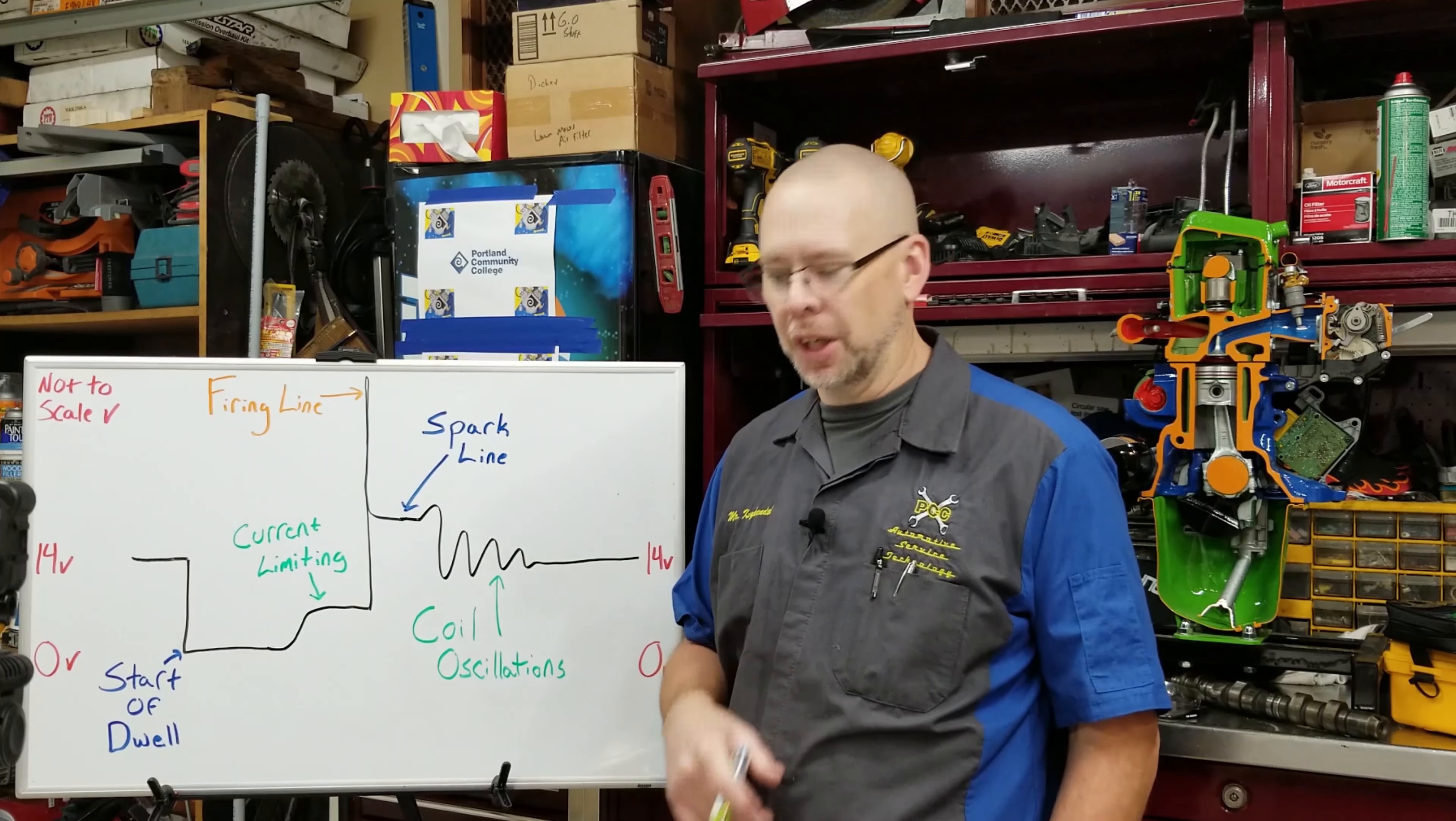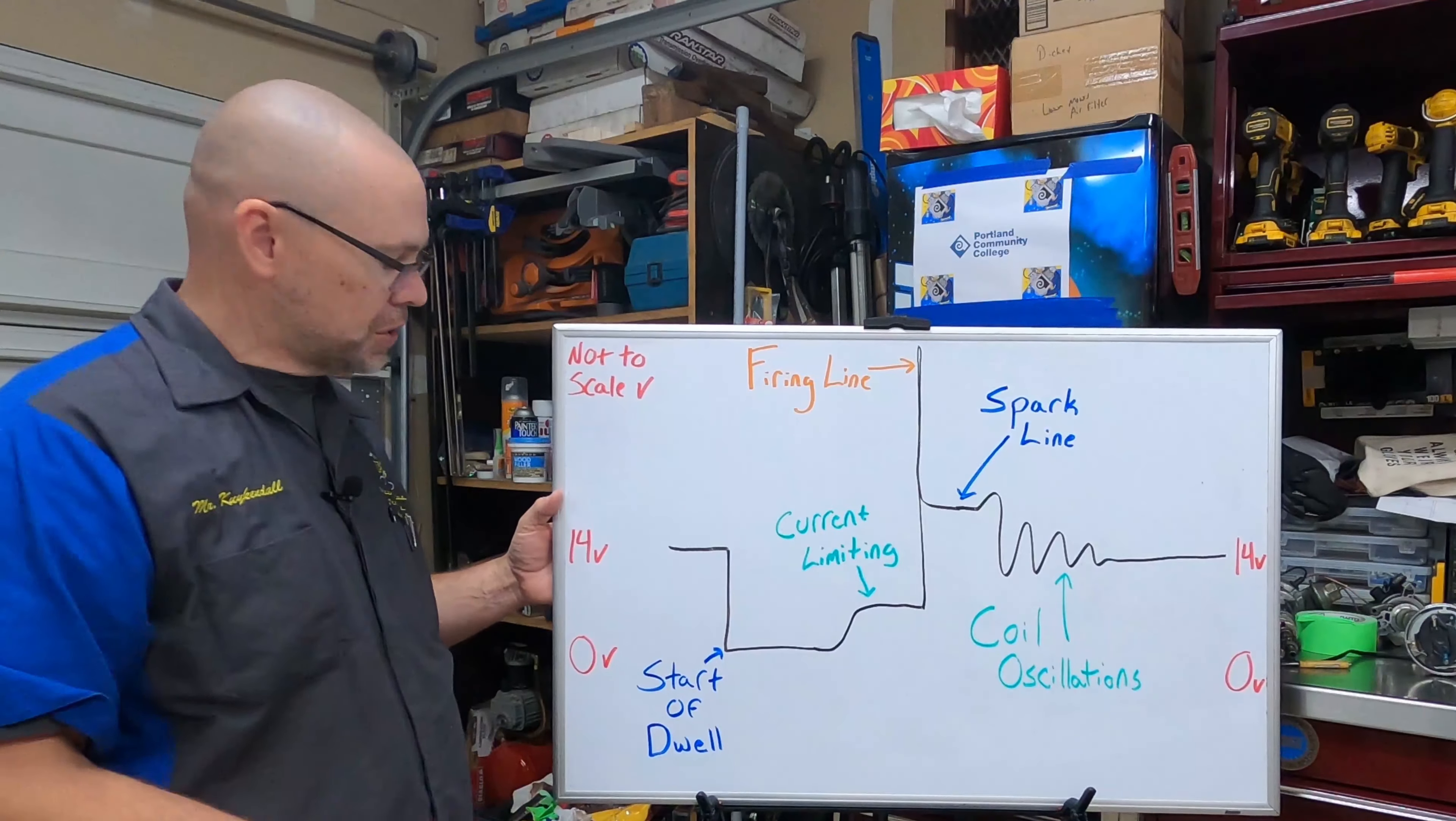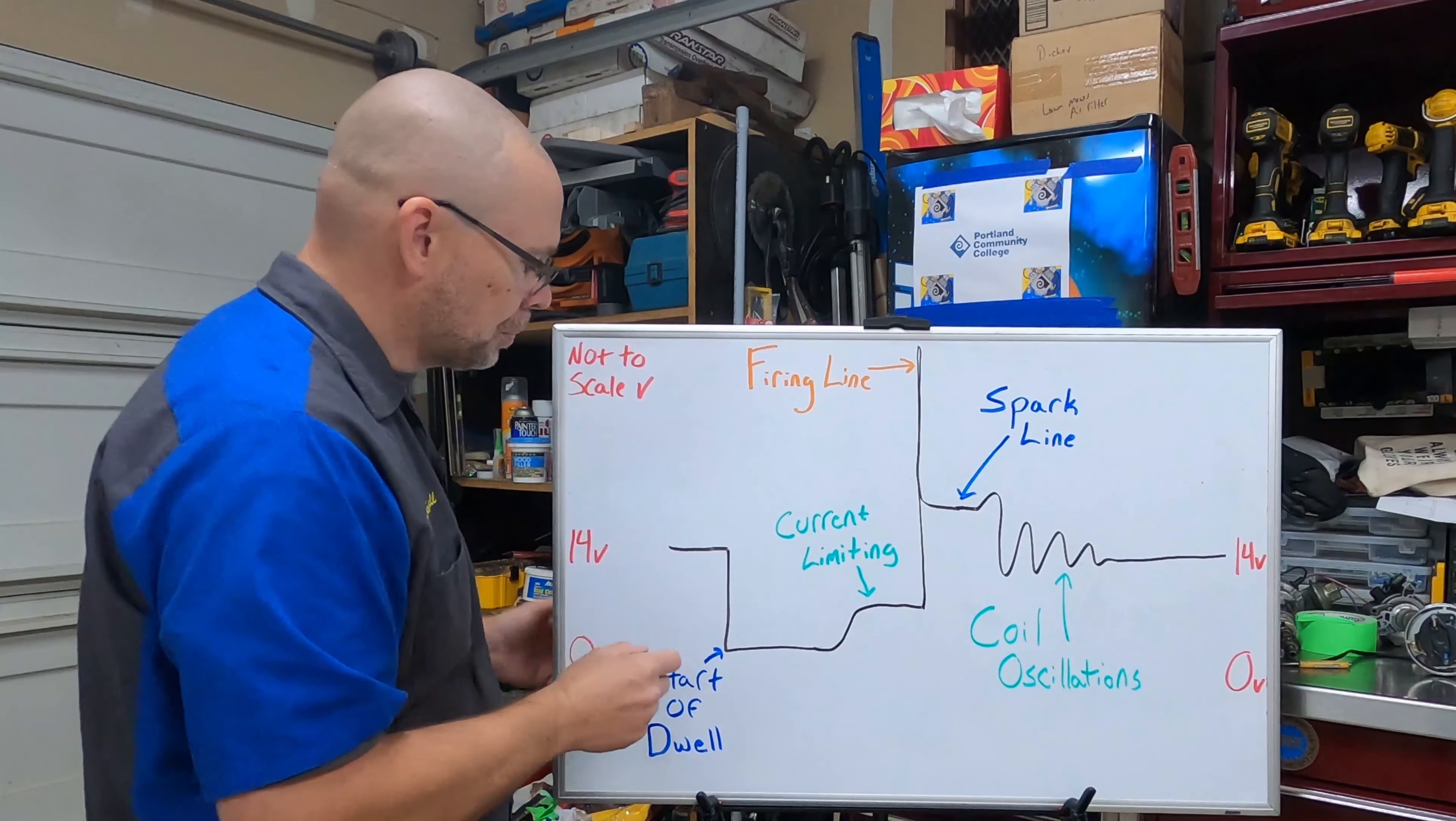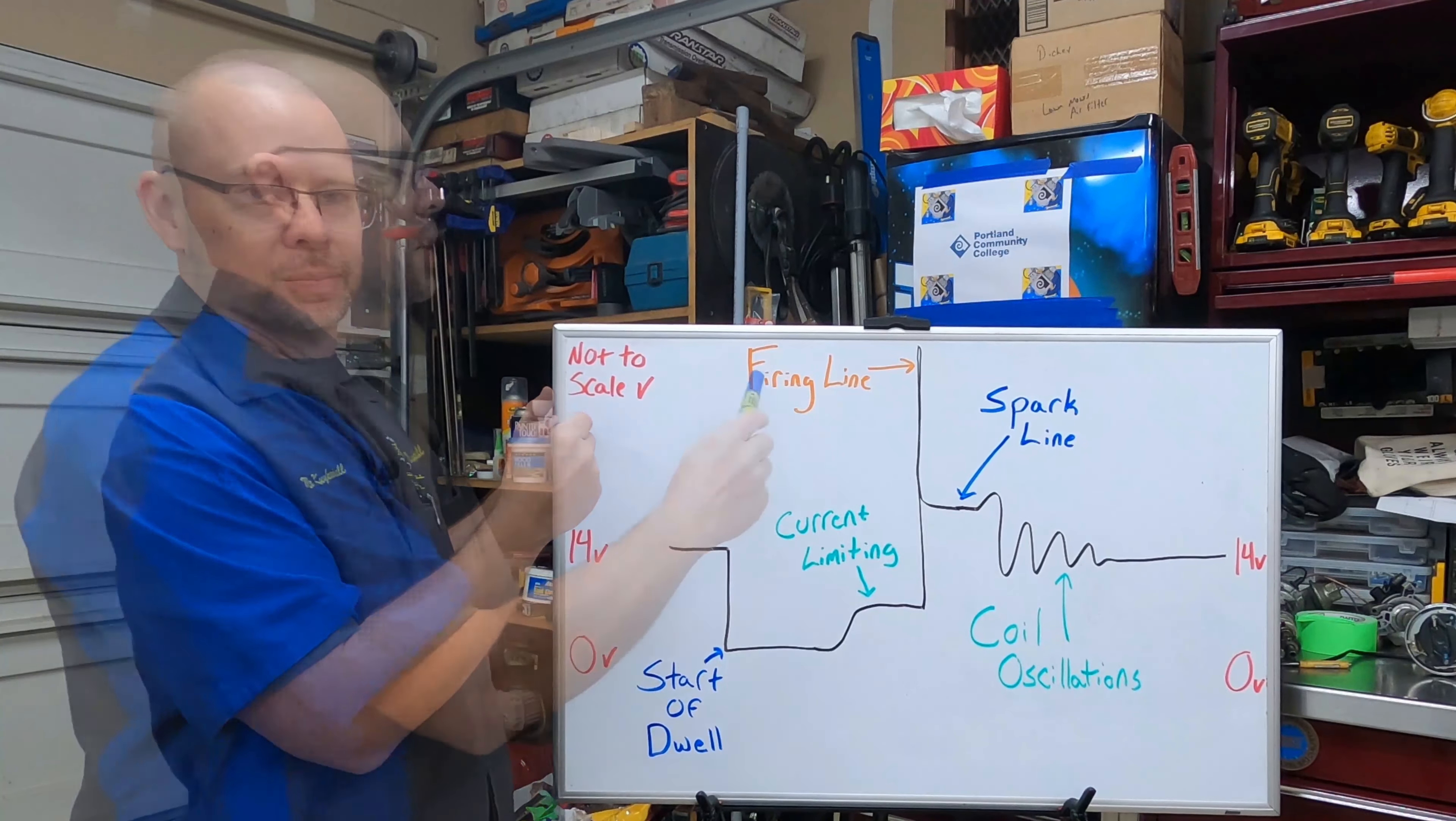All right, now that we know where to hook up on the car, now we're going to talk our way through the waveform so we can analyze what we were looking at. Our scale here, we have zero volts or ground at the bottom, we have 14 volts. I put 14, pretty common system voltage. We should start and end at 14 volts. If we start and end at different places that means we have connection issues in the circuit, we have problems we need to go looking at.